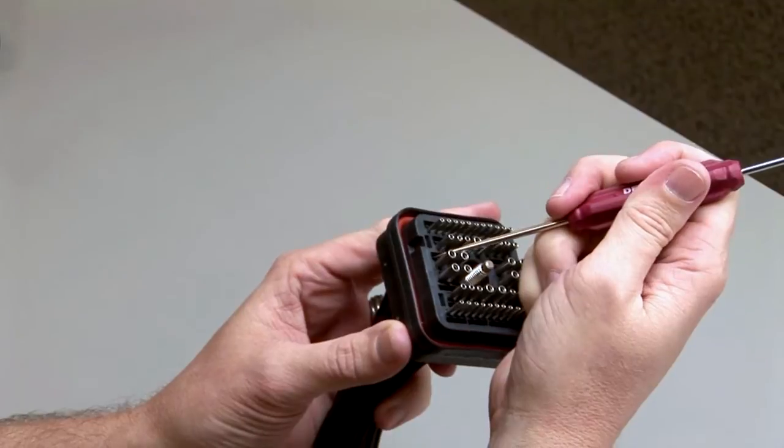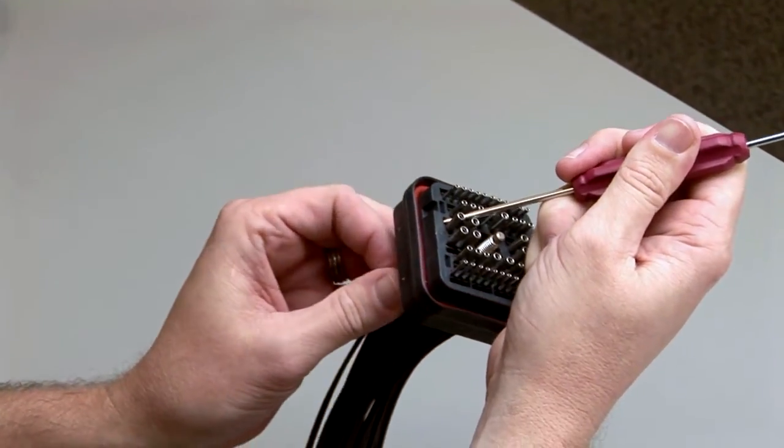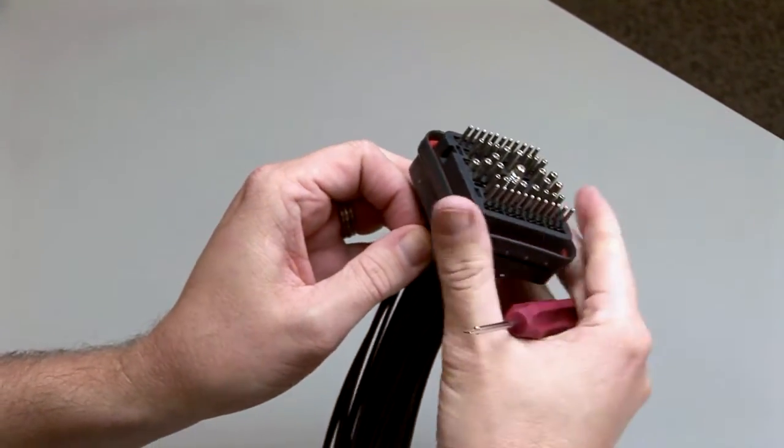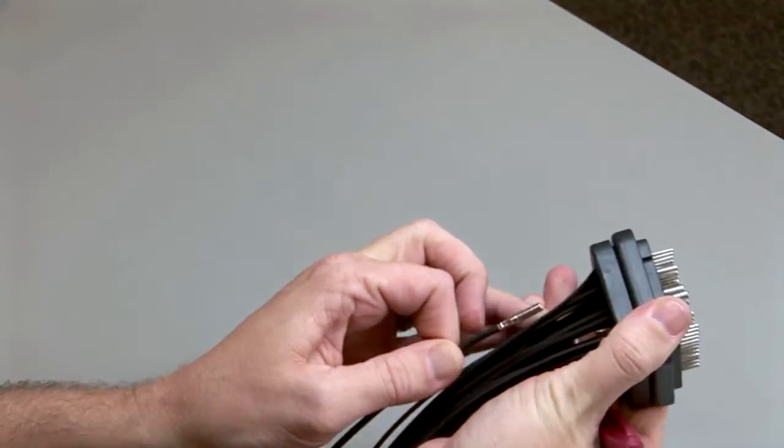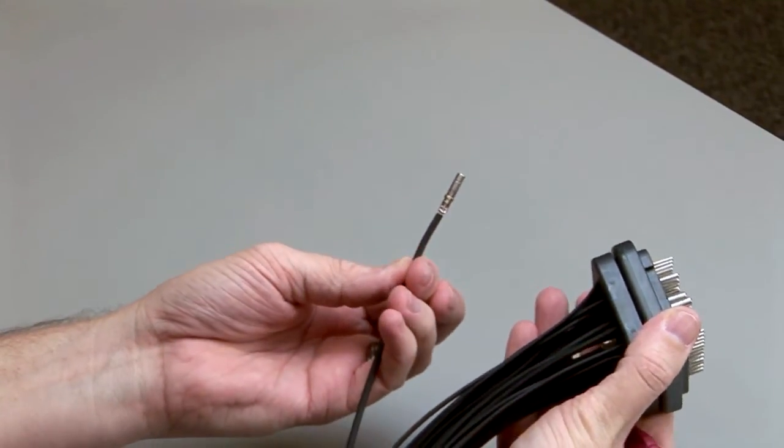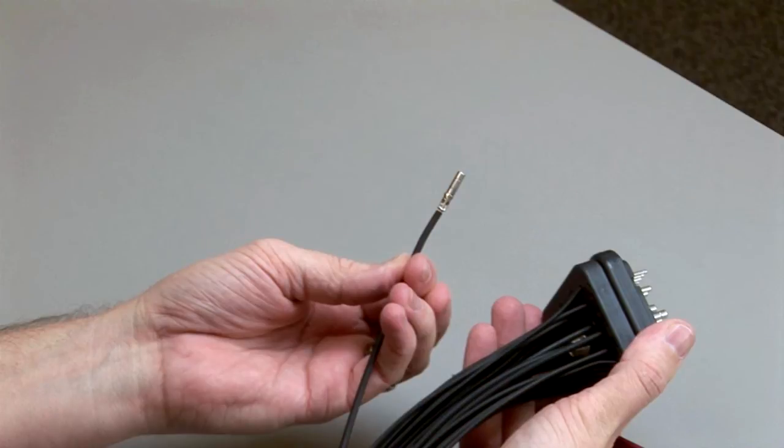To remove the contacts, release the locking finger by moving it away from the shoulder of the contact with a screwdriver, while at the same time gently pulling the wire through the rear grommet or wire router.